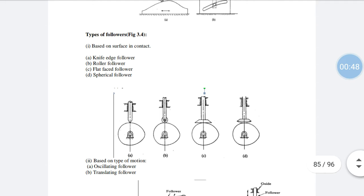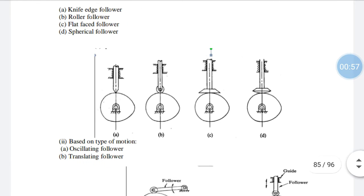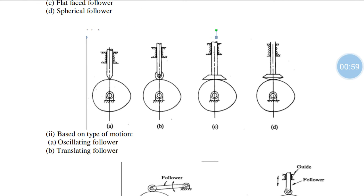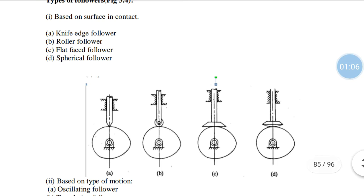The second type is the roller follower. Instead of giving an edge, we fix a roller on the follower — refer to figure B. In this, the roller is fixed and it will trace the shape of the CAM and move along with it. All the types we are seeing here are reciprocating type followers.